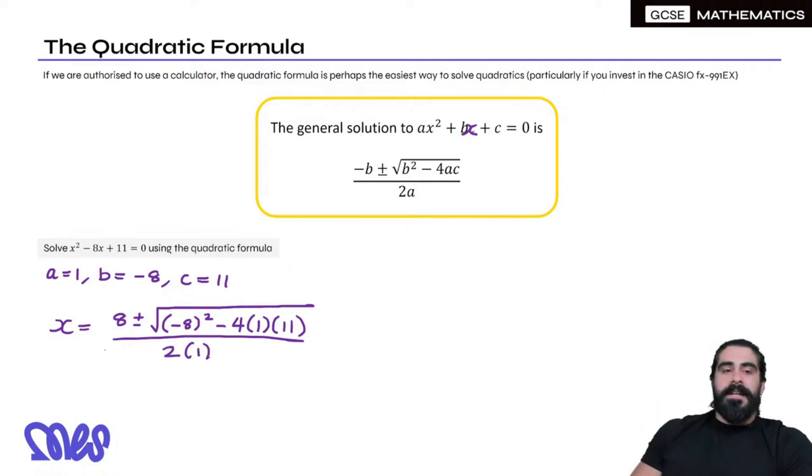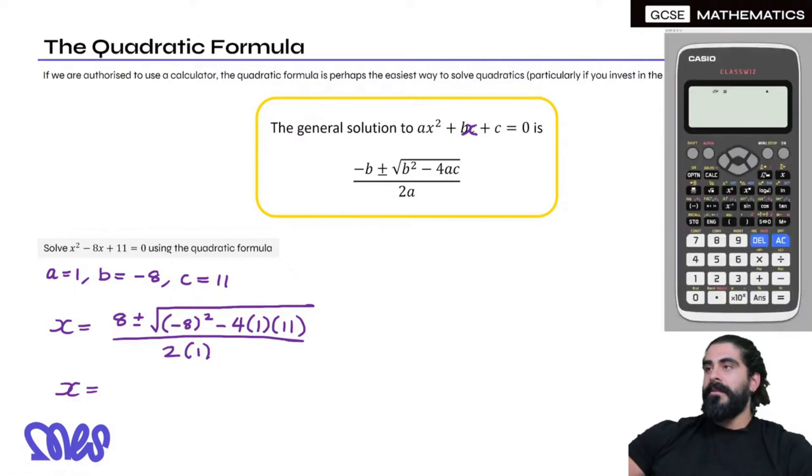I'm going to give you a tip. Examiners want to see this step before you go straight to the answer. Do you know this b² - 4ac? Type that into the calculator first. Type that in first, and then put your full answer in. So we have 8 plus or minus root 20 over 2. You get a mark for typing in b² - 4ac.